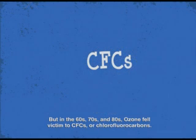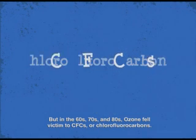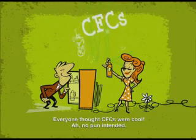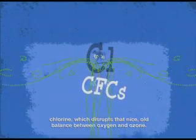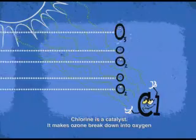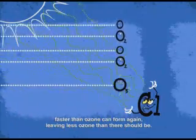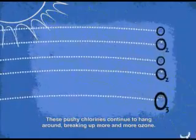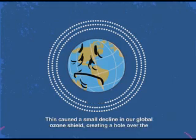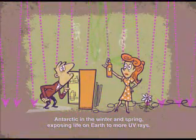But in the 60s, 70s, and 80s, ozone fell victim to CFCs, or chlorofluorocarbons. CFCs are chemicals used in making aerosol sprays and refrigerants. Everyone thought CFCs were cool — no pun intended. CFCs aren't a problem until they reach the stratosphere. Up there, they release chlorine, which disrupts that nice old balance between oxygen and ozone. Chlorine is a catalyst — it makes ozone break down into oxygen faster than ozone can form again, leaving less ozone than there should be. These pushy chlorines continue to hang around, breaking up more and more ozone. This caused a small decline in our global ozone shield, creating a hole over the Antarctic in the winter and spring, exposing life on Earth to more UV rays.